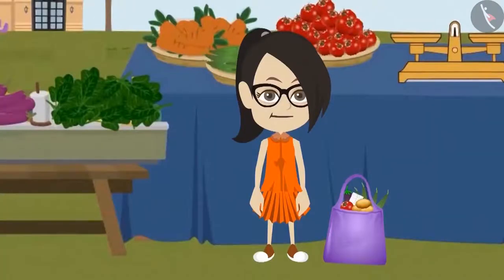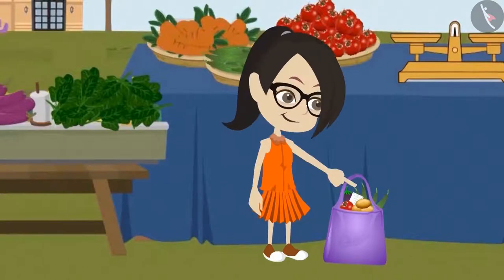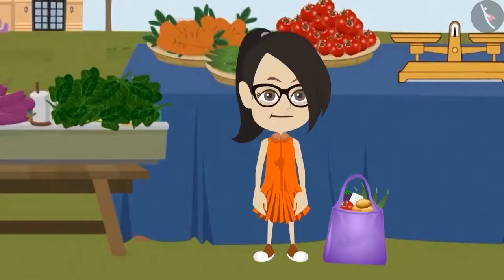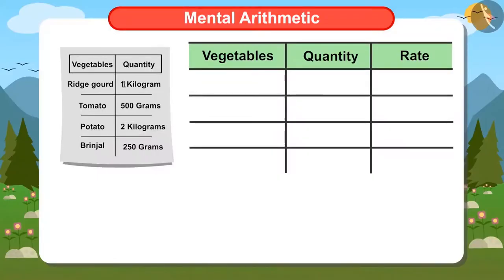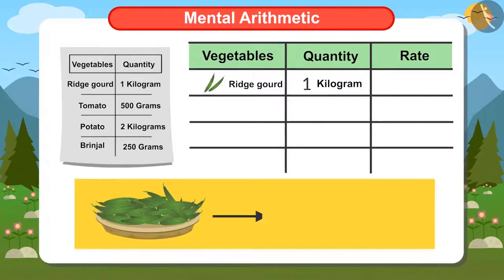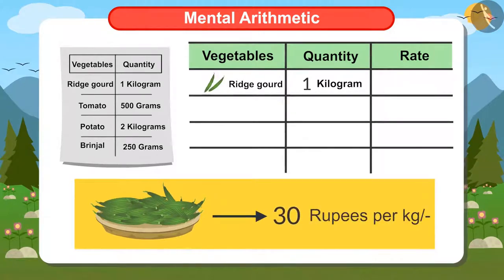Let me calculate the cost of these vegetables without paper and pen. You can also try doing it with me. I have bought one kilo of ridge guard. The price of ridge guard is 30 rupees a kilo. Hence, I have to pay 30 rupees for the ridge guard.